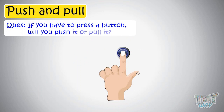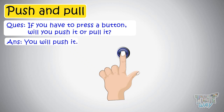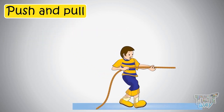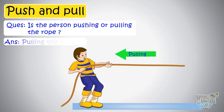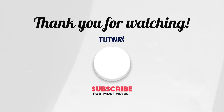Here is another example — if you have to press a button, you will push it or pull it? You will push it. Here is another example. See the picture — is the person pushing or pulling the rope? He is pulling the rope.